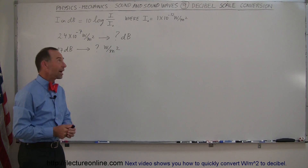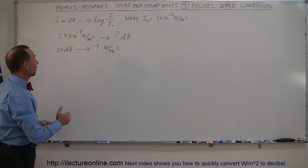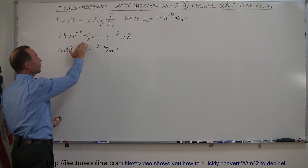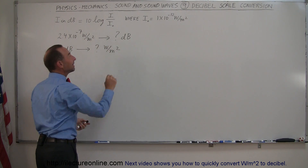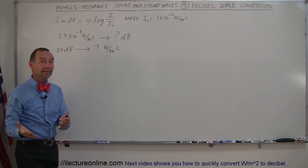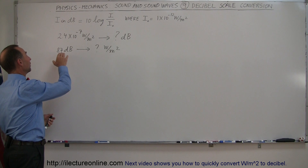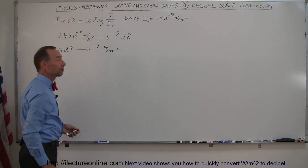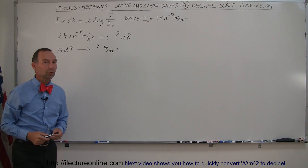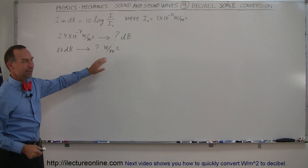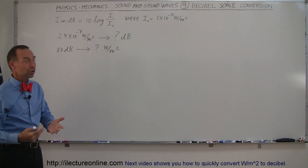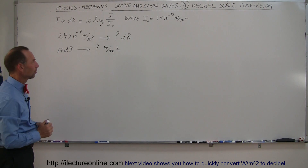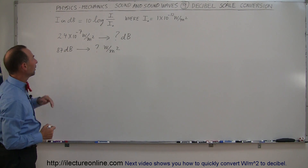In this video, I'm going to show you how to convert from intensity expressed in watts per square meter to intensity expressed in decibels, and conversely, from intensity expressed in decibels back to intensity expressed in watts per square meter. Watts per square meter is your standard units, so sometimes you need to make the conversion to do certain problems. So let's start with the first one.